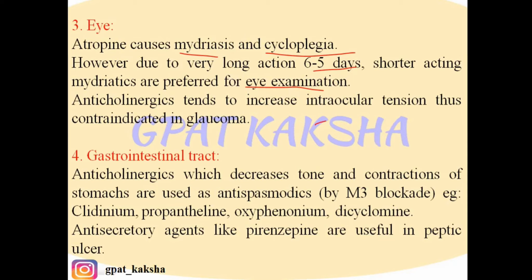Anticholinergics tend to increase intraocular tension and are therefore contraindicated in glaucoma. Whichever drugs produce mydriatic action on the eye will tend to increase intraocular tension. Cholinergic drugs, by contrast, are used for the treatment of glaucoma because they produce miosis and decrease intraocular tension by facilitating uveoscleral outflow.